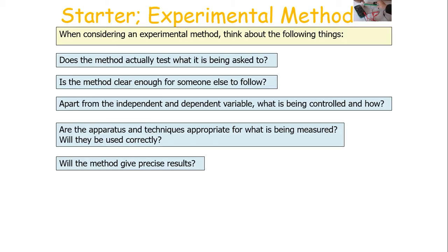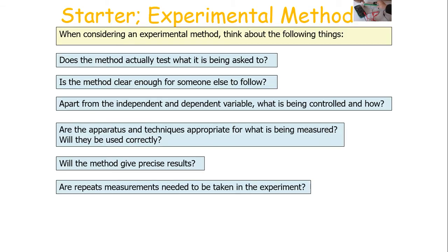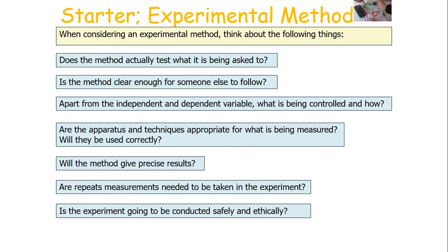Think about what device you're using and also think about the technique with which you use the device. Will the method give precise results? In this context, precise means values of similar quantities — for example, 7.2, 7.3 and 7.2 are precise results because the range of the data is not large. Are repeated measurements needed in this investigation, and if so, how many and what will you do with the measurements? And is the experiment going to be conducted safely and ethically — is the experimenter safe when carrying this out?